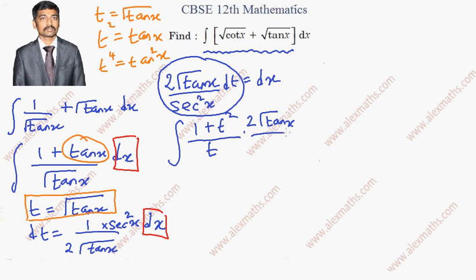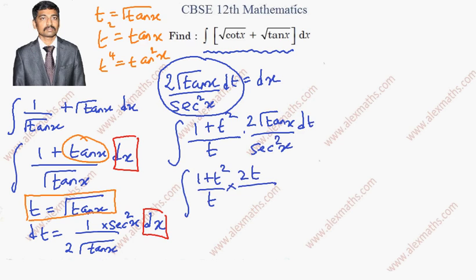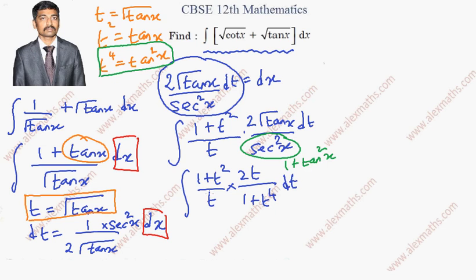Instead of dx, we copy the expression: (2√(tan x) / sec²x) dt. We need to change everything in terms of t, so this becomes (1 + t²)/t · (2t / sec²x) dt. According to the trigonometric identity, sec²x = 1 + tan²x = 1 + t⁴.